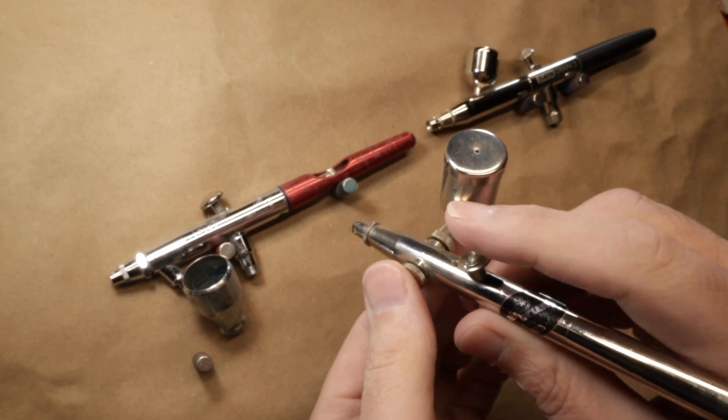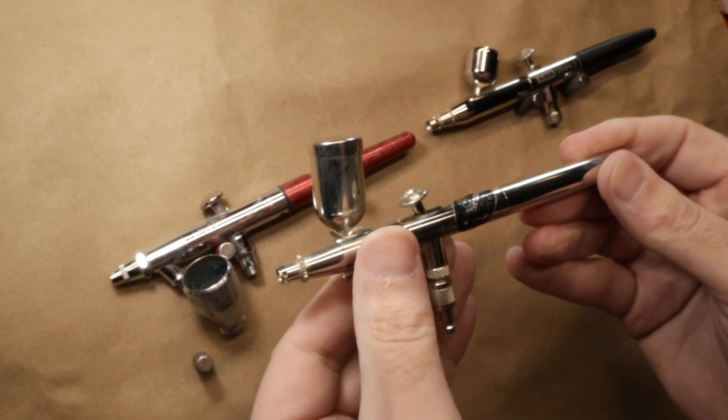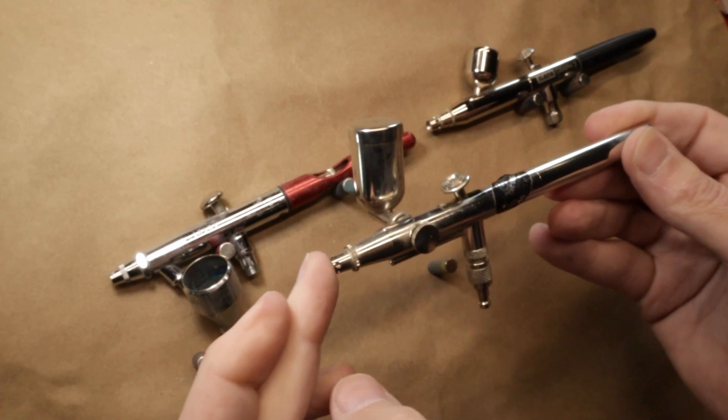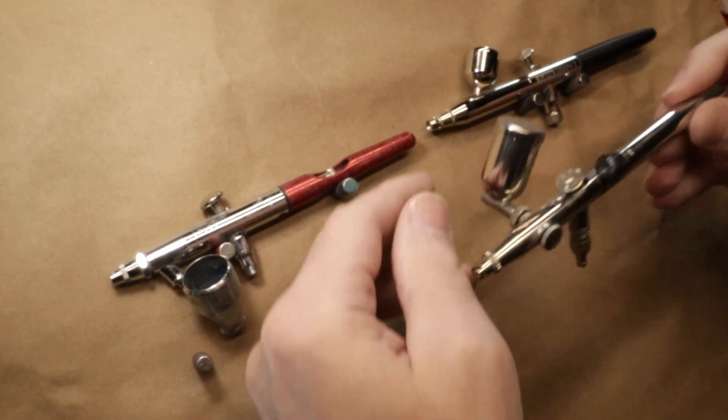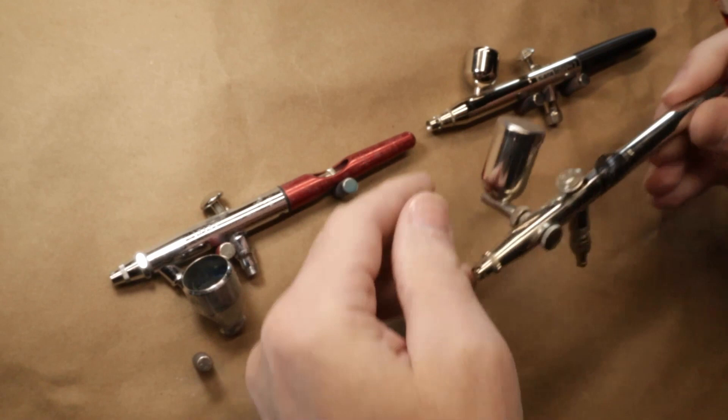So that is the side feed. What the side feeds traditionally were good for or where they were mostly used was illustration and finer work, and that's mostly because of the way that the nozzle and needle are set up in the brush. And I'll get into that after we go over the different styles of feed.